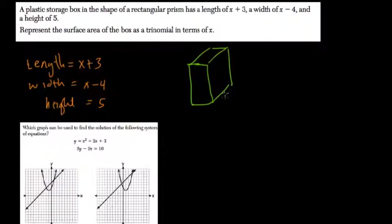So here's my rectangular storage box, and we have our length is usually this dimension, x plus 3. And our width is right here, x minus 4. And the height, this lateral height right here, is just 5.